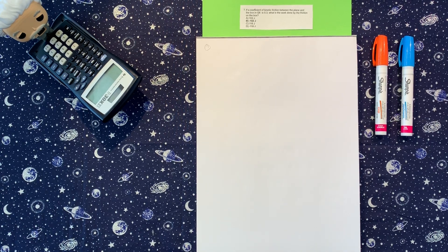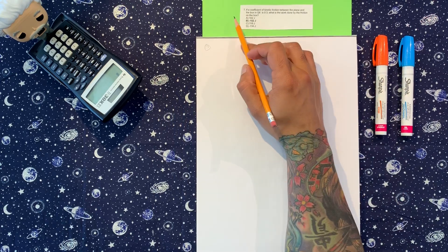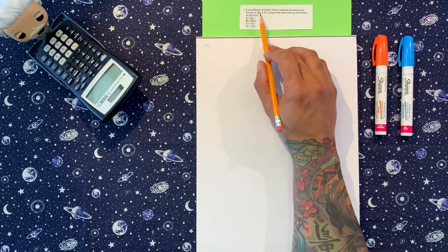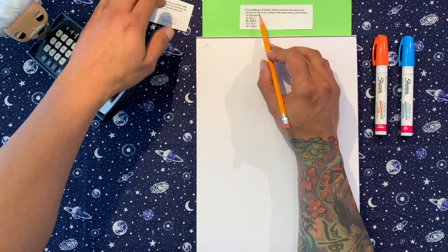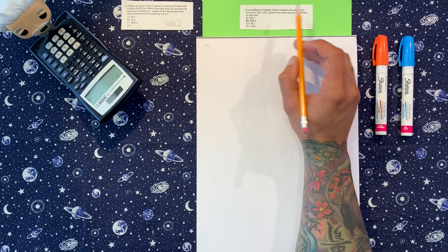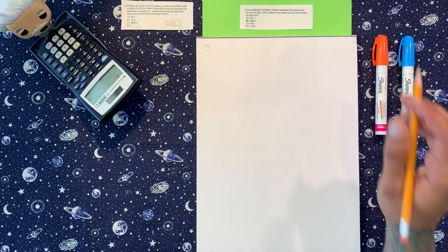All right, almost halfway there. So we got number seven. If the coefficient of kinetic friction between the plane and the box in question six is 0.3, what is the work done by the friction on the box?